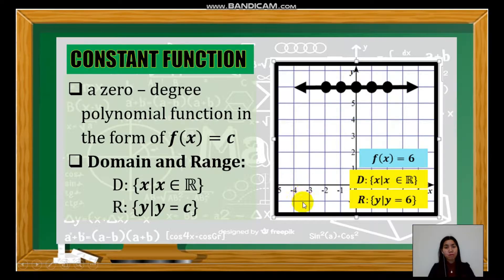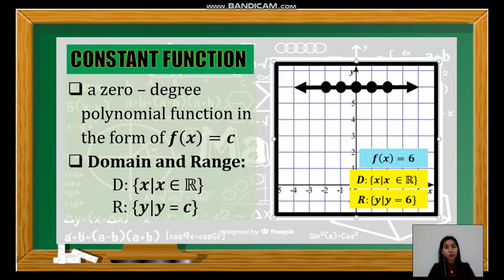Let's have an example. We have the function f(x) = 6. The graph is a horizontal line that extends both left and right continuously, which means it covers all real numbers on the x-axis — the positive, the negative, and the zero. That's why the domain is the set of real numbers. While the range, as you can see on the y-axis, it only touches the value of 6, which means the range is y = 6.